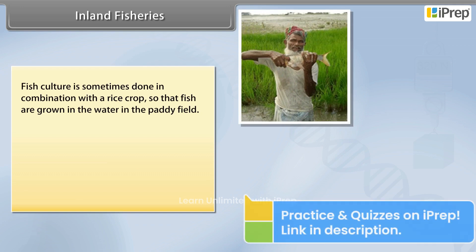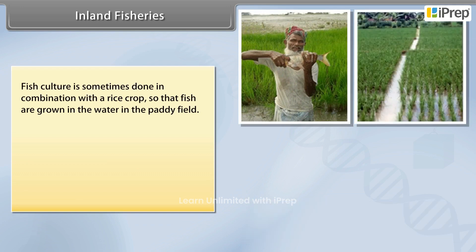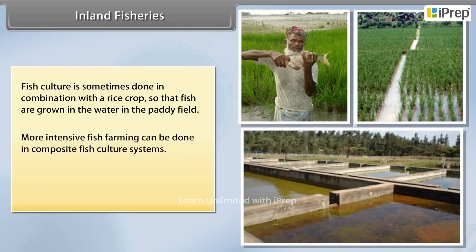Fish culture is sometimes done in combination with the rice crop, so that fish are grown in the water in the paddy field. More intensive fish farming can be done in composite fish culture systems, where both local and imported fish species are used.